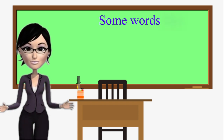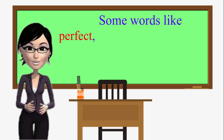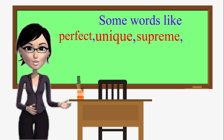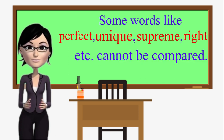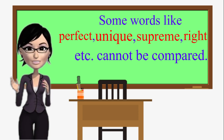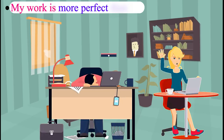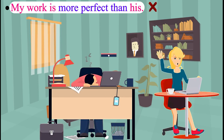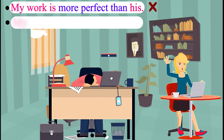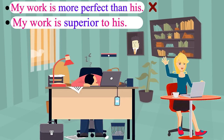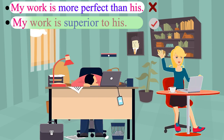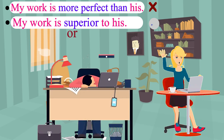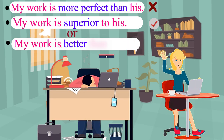Some words like 'perfect,' 'unique,' 'supreme,' 'right,' etc. cannot be compared. It is incorrect to say 'My work is more perfect than his.' Please repeat the correct sentence after me: My work is superior to his. Or: My work is better than his.